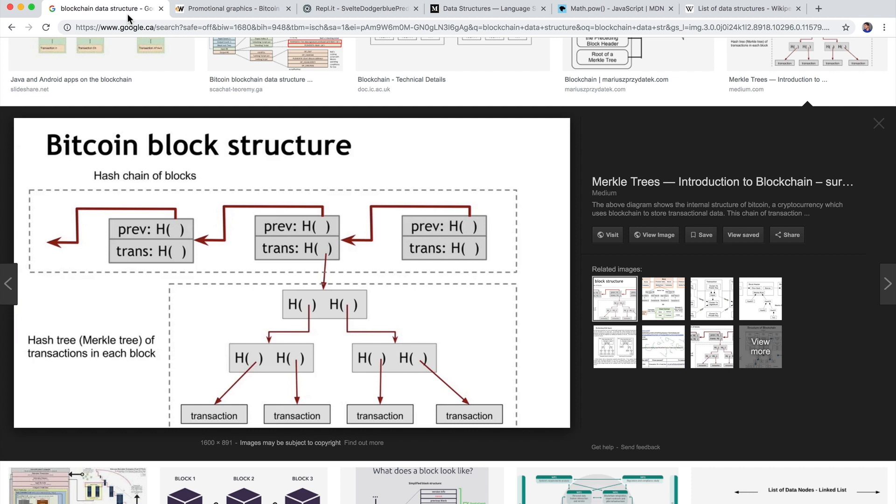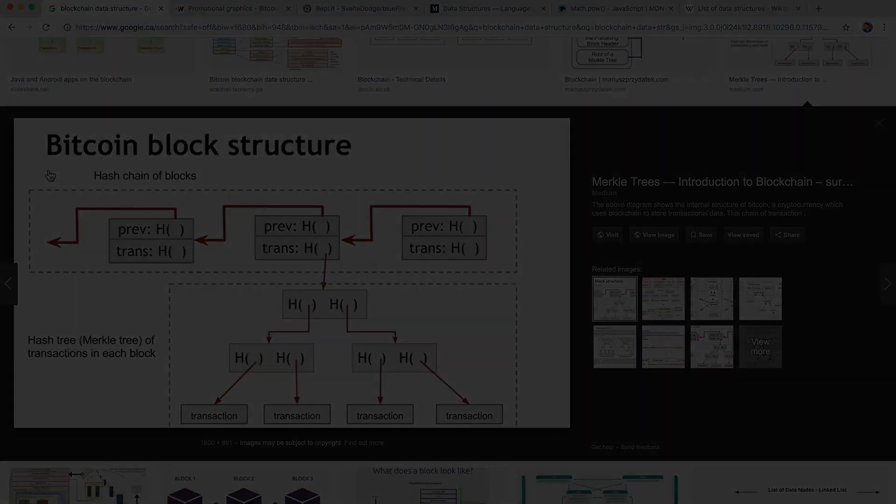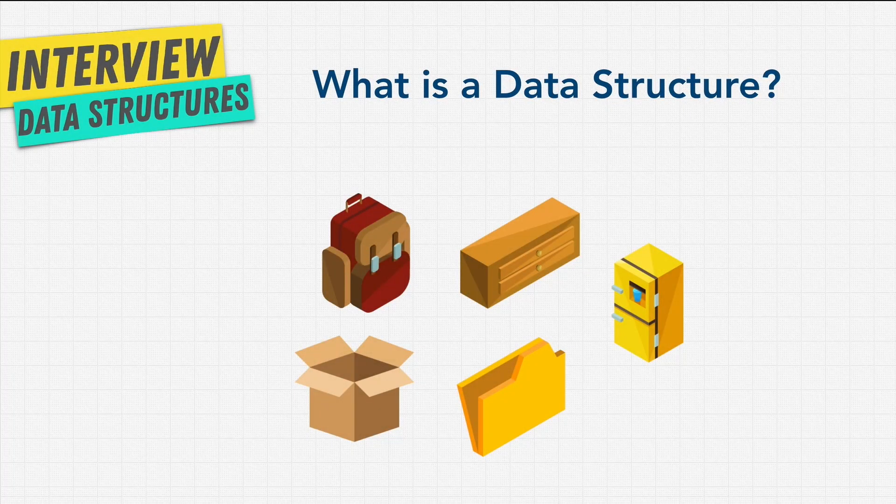Well, blockchain, at the end of the day, is simply a data structure, a way to hold information. So in our programming world, data structures, we can store things like numbers, strings, Boolean types,